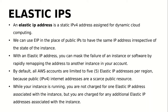Elastic IPs help you to maintain a static IP address for your EC2 instances. By default, whenever you launch your EC2 instances, your instance will get a public IP address and a private IP address. When you stop and start your instance again, the IP address will be lost and a new IP address will be allocated.